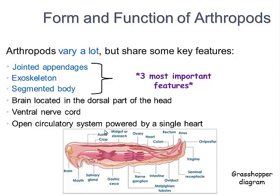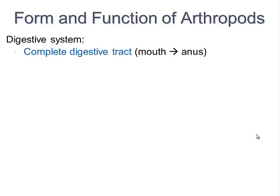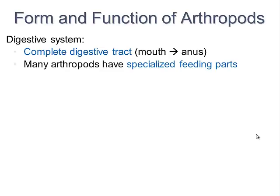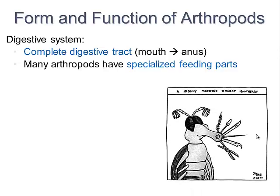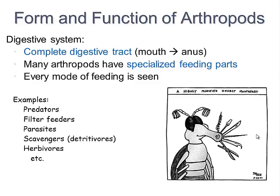Sometimes we have the opportunity to do a grasshopper dissection, but we won't this year. The digestive system has a complete tract going straight from mouth to anus. They have specialized feeding parts but are highly diversified — the way they eat is specific to what they eat. Every mode of feeding is seen: predation, filter feeding, parasitism, scavenging, and herbivory. This diversity makes sense given how many species are in this phylum.